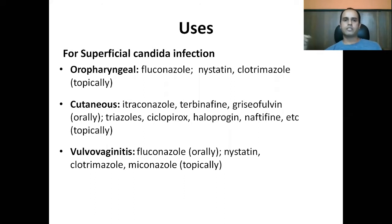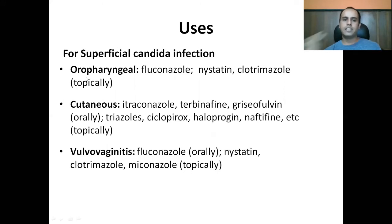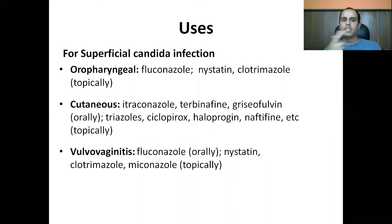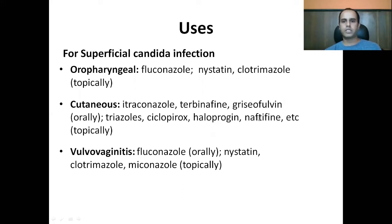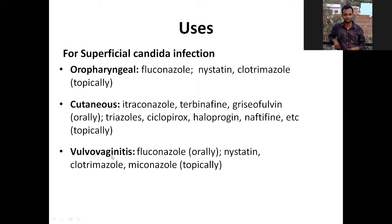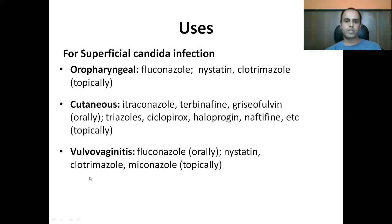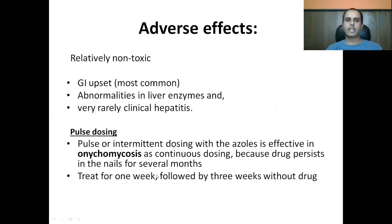For oropharyngeal candida infection, fluconazole, nystatin, and clotrimazole can be used. Nystatin is used topically — even when used for oropharyngeal candidiasis it is considered topical since it will not get absorbed and gets excreted in the GI tract. For cutaneous candida infection, itraconazole, terbinafine, and butenafine are used, along with ciclopirox, naftifine, and other agents. For vulvovaginitis, fluconazole, nystatin, terconazole, miconazole, and other drugs are also used.